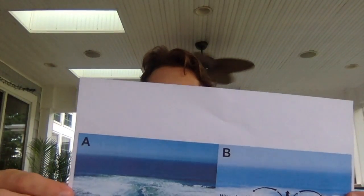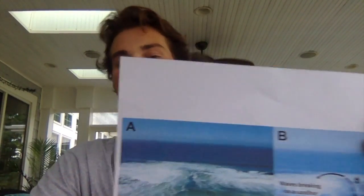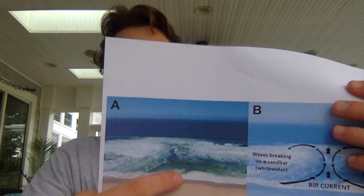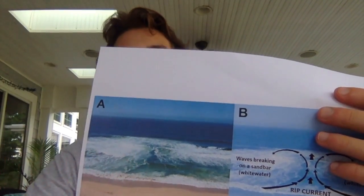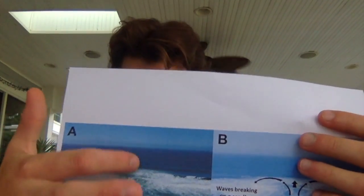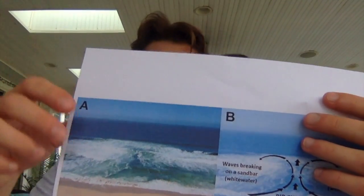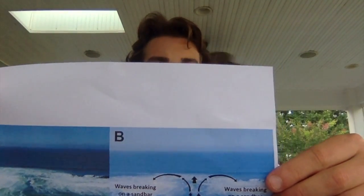Here are two pictures showing rip currents and where they exist. As you can see in picture A, the rip current is right here in the middle because all that water is being sucked — that white water is pushing outward to sea. And then it's circling right back around due to the waves coming in, and that is where it's the strongest, as shown in picture B.